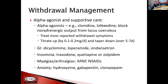Alpha agonists — more fully, alpha adrenergic receptor agonists — are agents like clonidine, lofexidine, dexmedetomidine (Precedex), and tizanidine. They work by blocking the noradrenergic output from the locus coeruleus in the brain. Noradrenergic output triggers autonomic hyperactivity, anxiety, restlessness, and dysphoria, and these agents help treat those symptoms as well as many other withdrawal symptoms. Because of their blood pressure effects, you start at a low dose like 0.1 to 0.2 mg per day and go up slowly, then taper down slowly as symptoms resolve to avoid rebound hypertension.